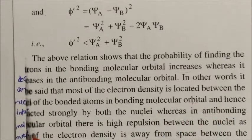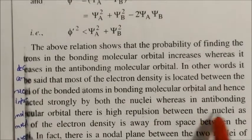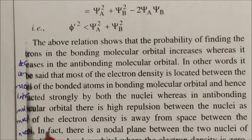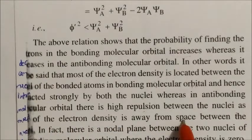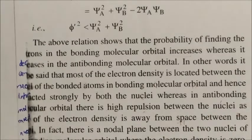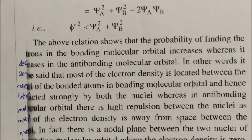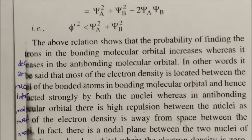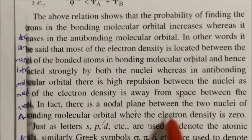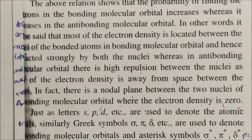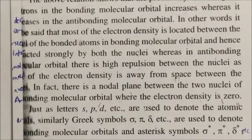In anti-bonding molecular orbitals, there is high repulsion between the nuclei. The electron density is away from the space between the nuclei. In fact, between the two nuclei of anti-bonding molecular orbitals, there is a nodal plane where the electron density is zero. In bonding molecular orbitals, the electron density is more between the nuclei. This is the key difference between bonding and anti-bonding orbitals.